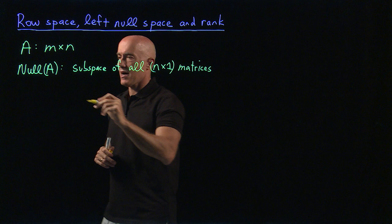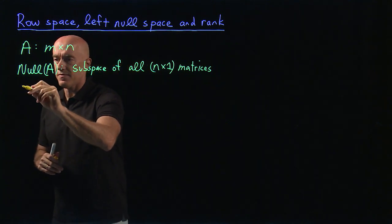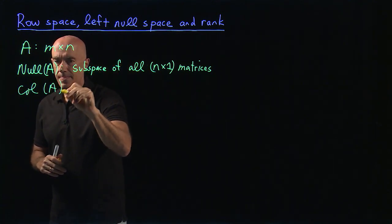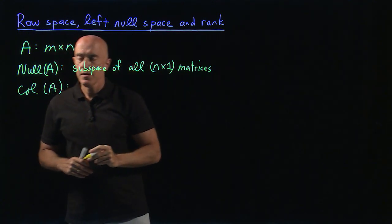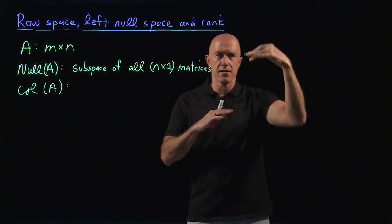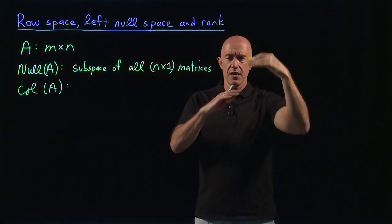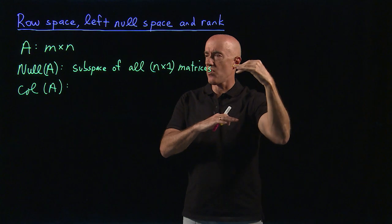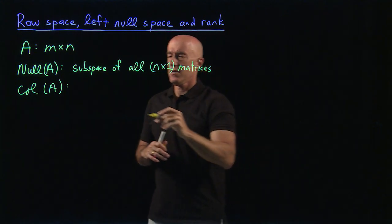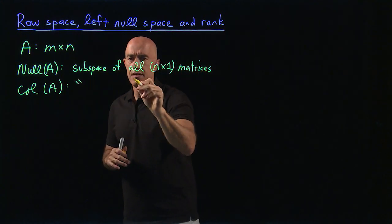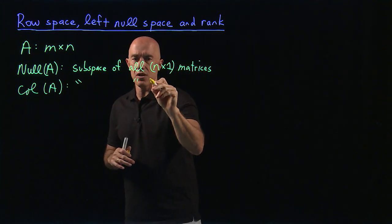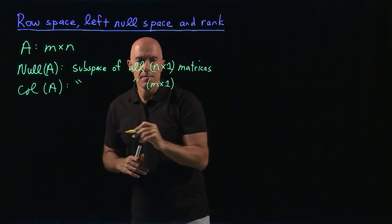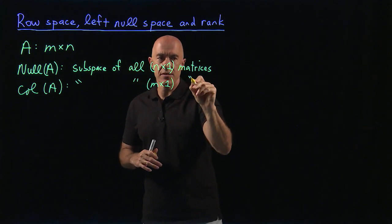What about the column space of A? The column space of A consists of vectors that have M rows, so this is a subspace of all M by 1 matrices.